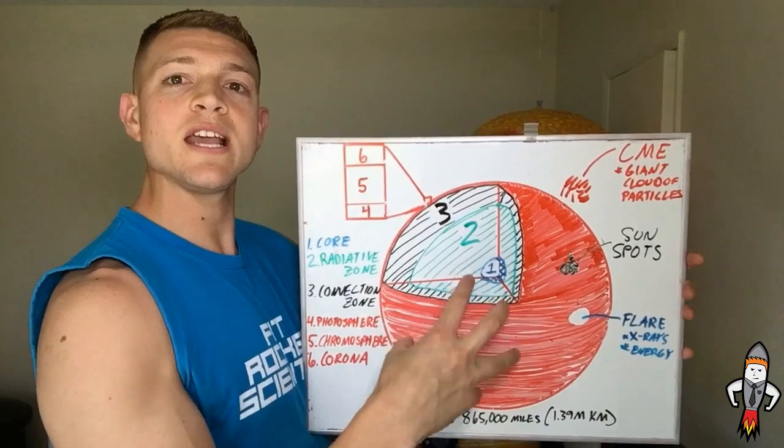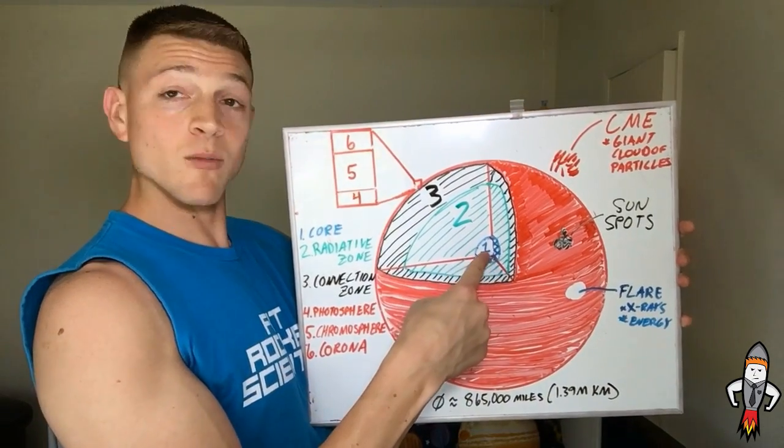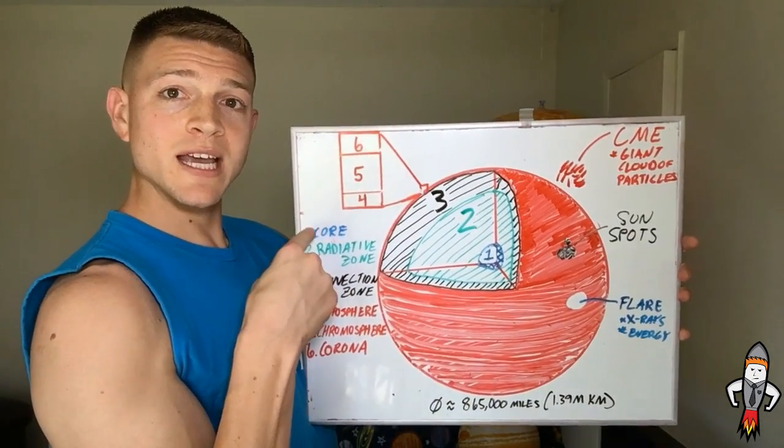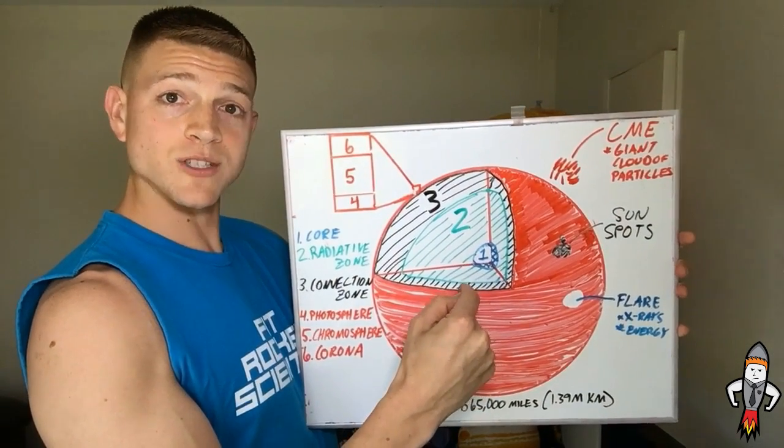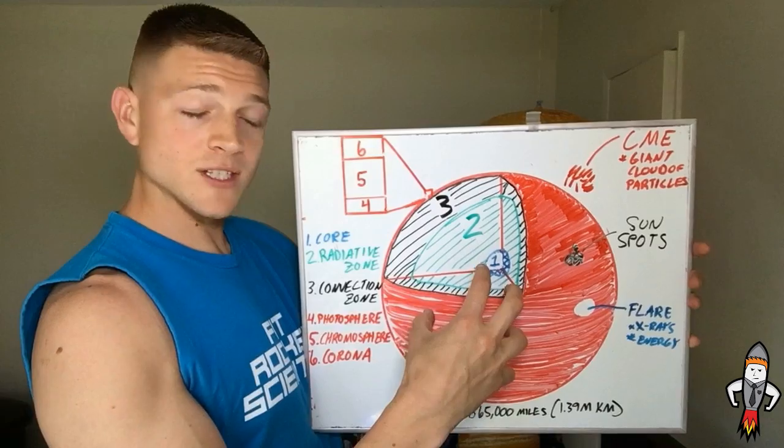So we're gonna start with the three inner layers of the Sun. The innermost layer, here number one is blue, is the core. It's the core. So as you go closer into the Sun, it's the hottest in the middle. The core is the hottest part of the inner layers of the Sun.